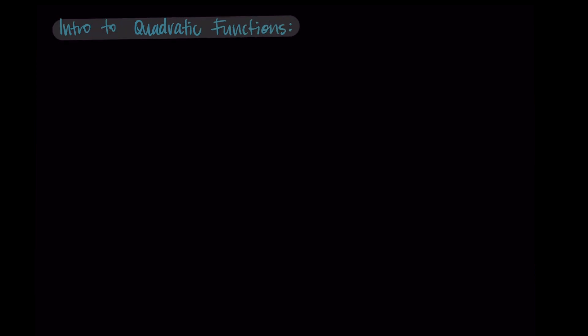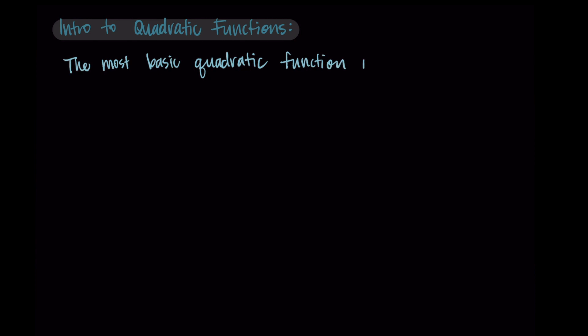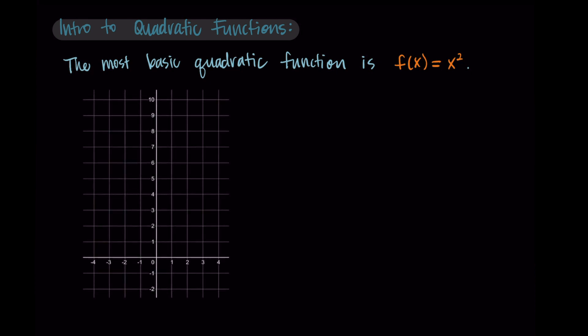Hi, and welcome. In this video, we're going to do an introduction to quadratic functions. Before I give you the formulas for the general version of a quadratic function, I want to start with our most simple and basic quadratic function — specifically f(x) = x squared. We're going to graph this using some points to find some vocabulary, and then we'll expand this to a more general version of quadratic functions.